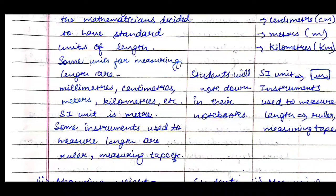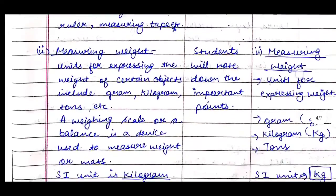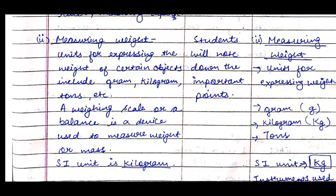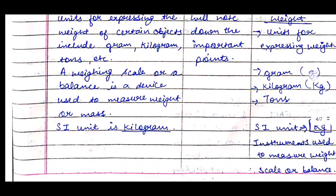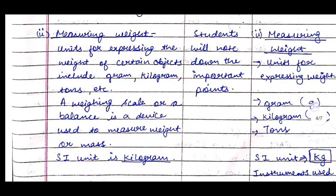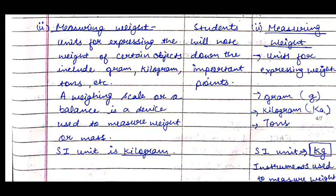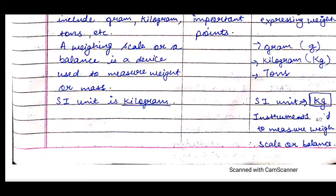Then we cover measuring weight. Units for expressing weight include gram, kilogram, and tons. A weighing scale or balance is a device used to measure weight or mass. The SI unit is kilogram. We'll write on the board: 'Measuring weight — units: gram, kilogram, tons; SI unit: kilogram; instrument used: scale or balance.' Students will note down the important points.